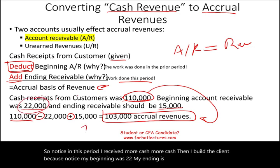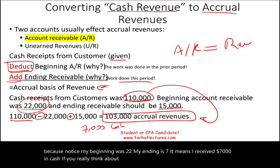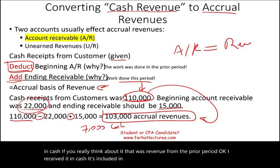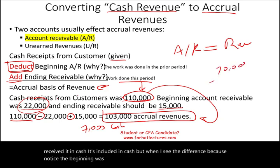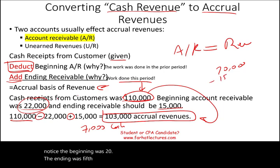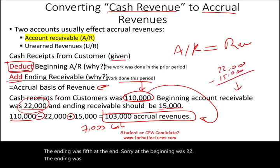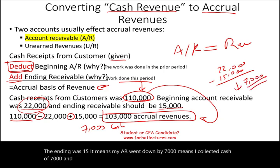It means I received $7,000 in cash that was revenue from the prior period. It's included in the cash receipts. When I see the difference — beginning was $22,000, ending was $15,000 — my AR went down by $7,000. It means I collected $7,000 in cash that is not revenue for this period, because my receivable went down. That's the logic behind it.